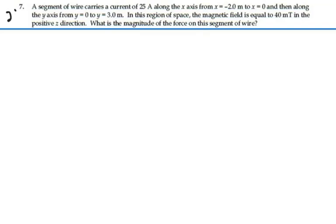Here's problem 29.7. A segment of wire carries a current of 25 amps along the x-axis from x equals minus 2 to x equals 0, and then along the y-axis from y equals 0 to y equals 3 meters. In this region of space, the magnetic field is equal to 40 millitesla in the positive z direction. What is the magnitude of the force on this segment of wire?